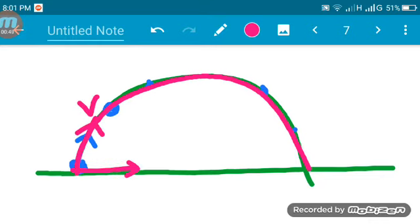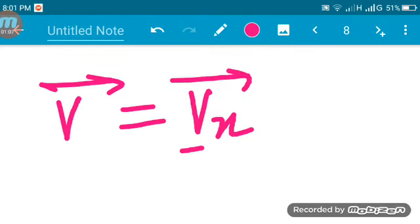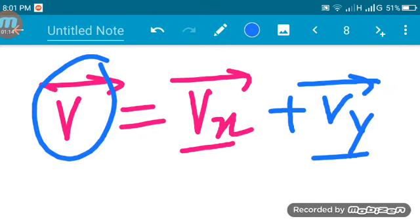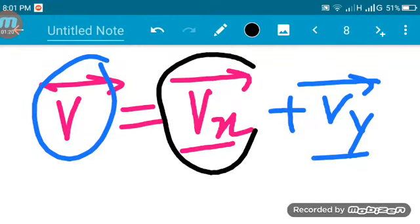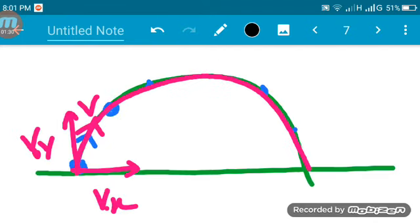We'll decompose the velocity into components: a horizontal component and a vertical component. The horizontal component is Vx and the vertical component is Vy. We need to understand how these components behave throughout the motion.